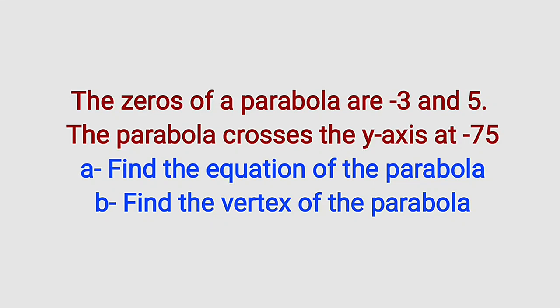Hello, good dear viewers. In this tutorial, we are going to find a solution to this nice word problem question related to quadratic equations. The question reads: the zeros of a parabola are negative 3 and 5. The parabola crosses the y-axis at negative 75. We are asked to find the equation of that parabola. We are also asked to find the vertex of the parabola. Let's start with the first one, which is the equation of the parabola.